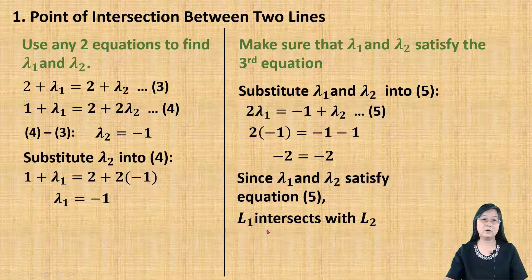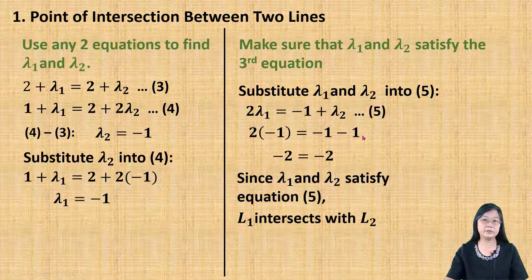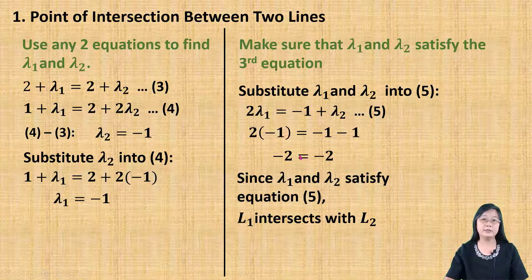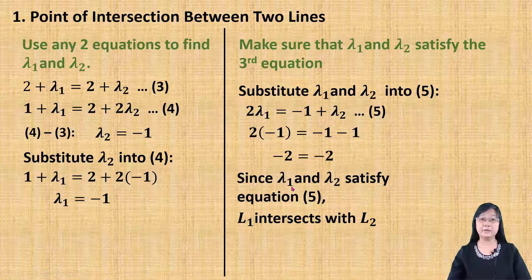Now, I can make the conclusion that L1 intersects with L2. Then, the following step, I must go and find the intersection point. Now, if in case when I substitute λ1 and λ2 into equation number 5, I find that on the left-hand side is negative 3, and on the right-hand side is negative 2 — that is, left-hand side not equal to right-hand side. So, in this case, λ1 and λ2 do not satisfy equation 5. This means line L1 does not intersect with line L2.